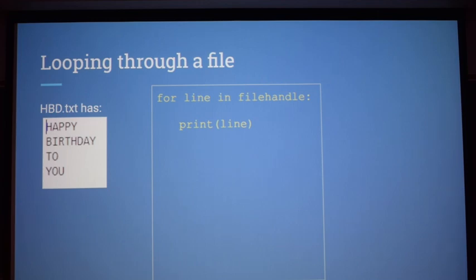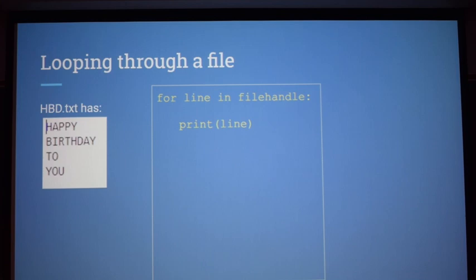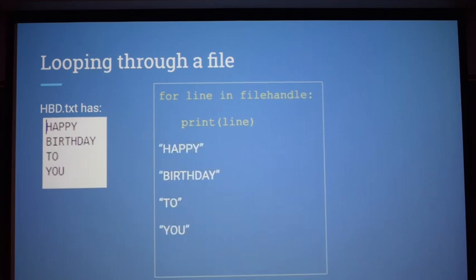For looping through items in a file, you can do 'for line in file_handle' — a for-each loop. You guys had a worksheet on different ways to loop through a file handle, like printing every line or every other line. For this example, doing 'for line in file_handle: print(line)' — what would the output be? It would print each line with its newline character, giving you individual lines on screen. That's correct.